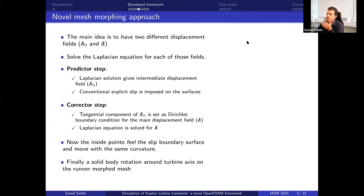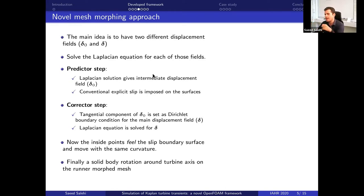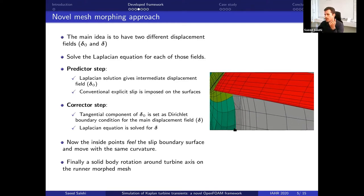What we have done is develop a new framework in which we solve the Laplacian equation twice instead of once. In the first step, the predictor step, we use the general slip condition to slip the points on the curved surface. We then extract that displacement and impose it as a Dirichlet condition for the corrector step. Then we solve the displacement again. Each of these steps also has its own diffusivity.